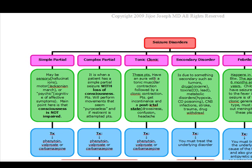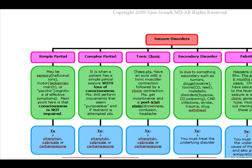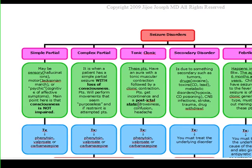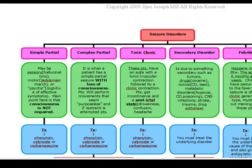Tonic-clonic seizures are also known as grand mal seizures. Simple partial is also known as locofocal; complex partial is also known as psychomotor. Tonic-clonic seizures are characterized by an aura, followed by tonic muscular contraction and then clonic contraction, lasting two to five minutes. These patients also experience incontinence — urinary or fecal — and a post-ictal state where they are drowsy, confused, sore, or have a headache. Remember the aura, incontinence, and post-ictal state.